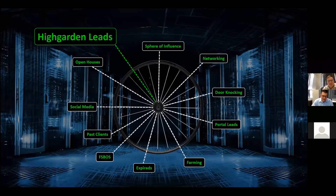The first thing I want to really emphasize is that High Garden leads are just one spoke on your wheel — they can't be the only spoke. You really have to supplement High Garden leads with open houses, social media, your past client plan. We have a couple agents focusing on FSBOs, but you've got to find two or three spokes on the wheel that you can really maximize. High Garden leads can be one, but it should not be your only one.